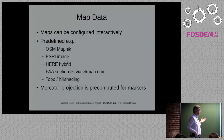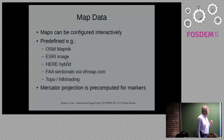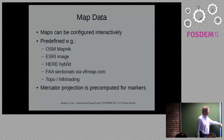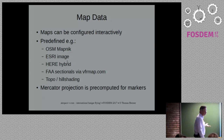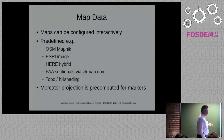Map data can be configured — you can choose the base layer or overlay layers. Options include ESRI satellite images, the HERE map, FAA sectional maps for the US, and topographic maps with hill shading. Hill shading is especially interesting for aviation in mountainous areas like Austria or Switzerland, where terrain can become a real concern.